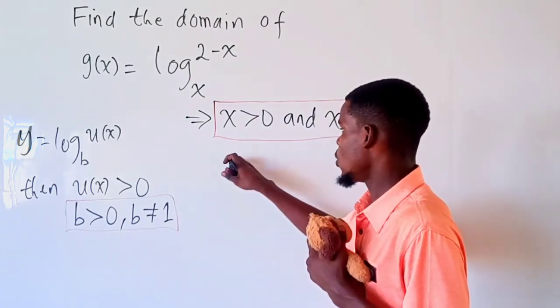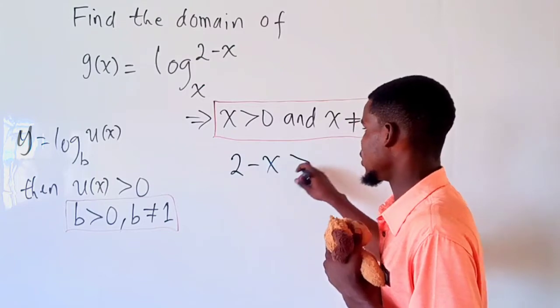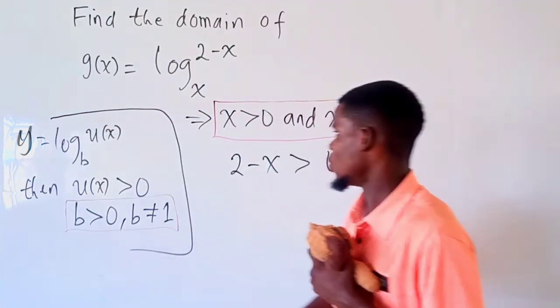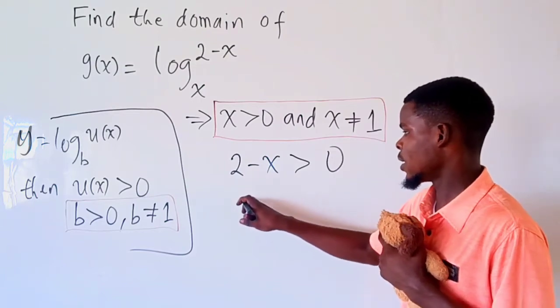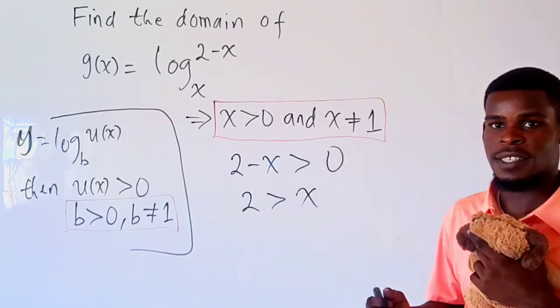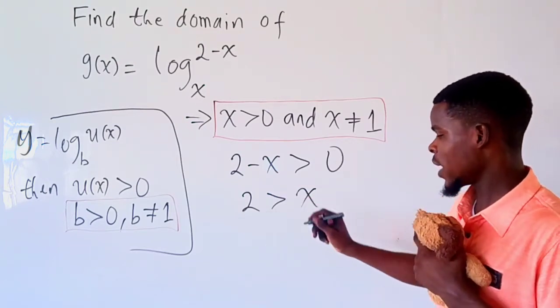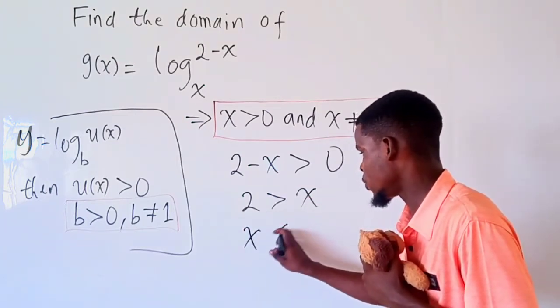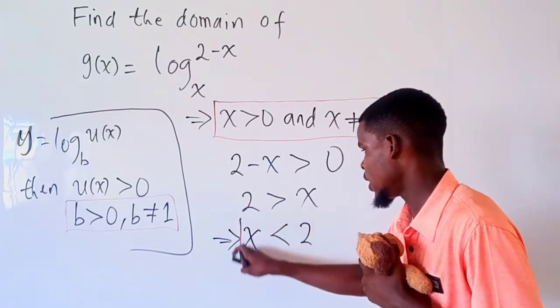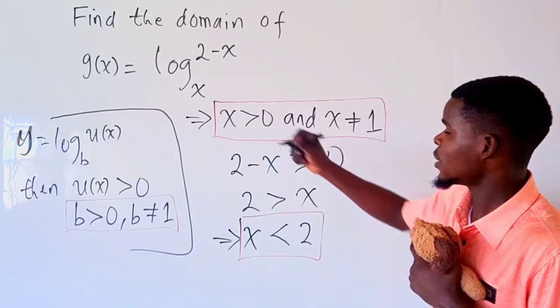So let's just start by doing this: you just say 2 minus x should be greater than zero. So by doing that, that tells us that 2 is greater than x. So I just move x to the right hand side of the inequality. So if 2 is bigger than x, that tells us that x is strictly less than 2.